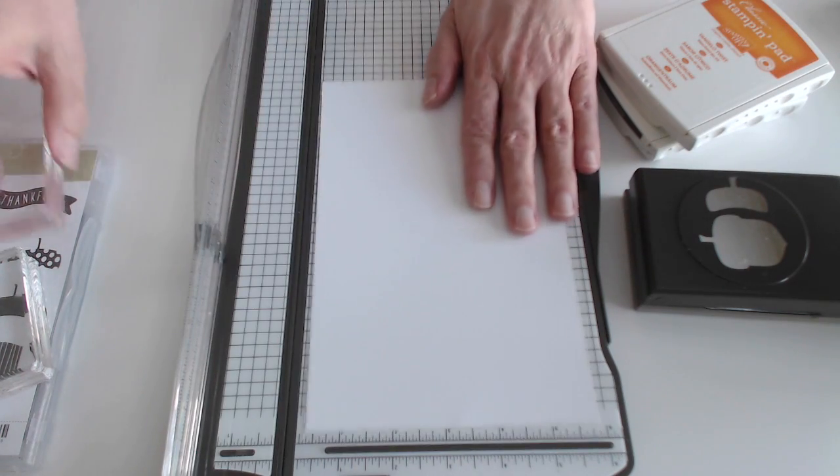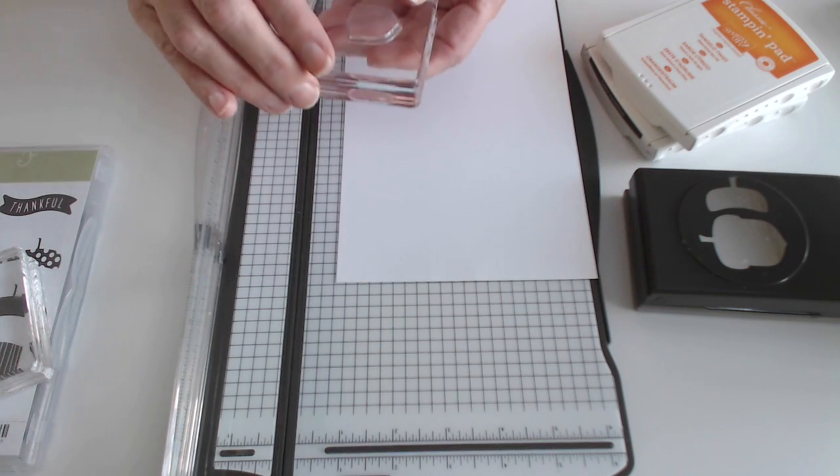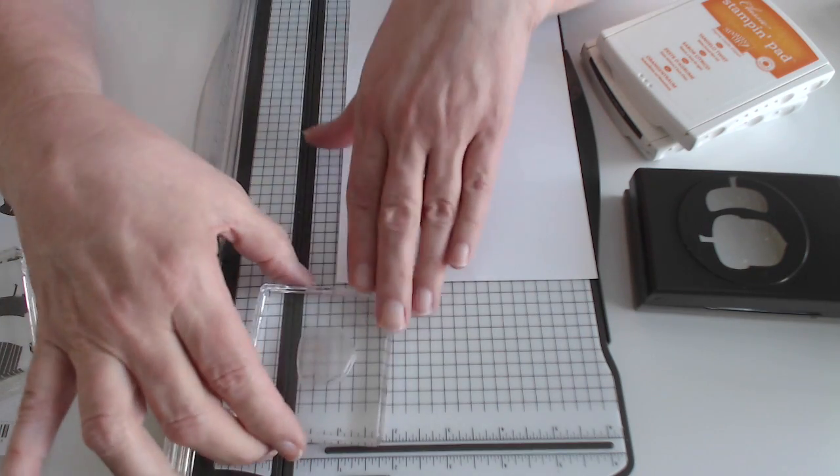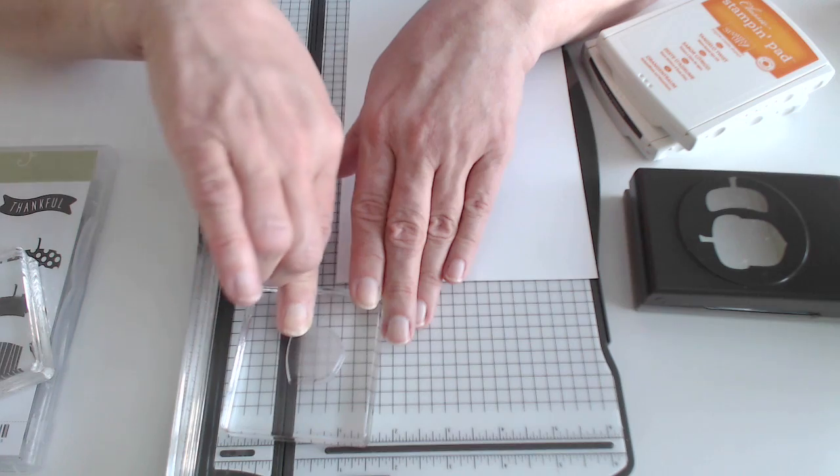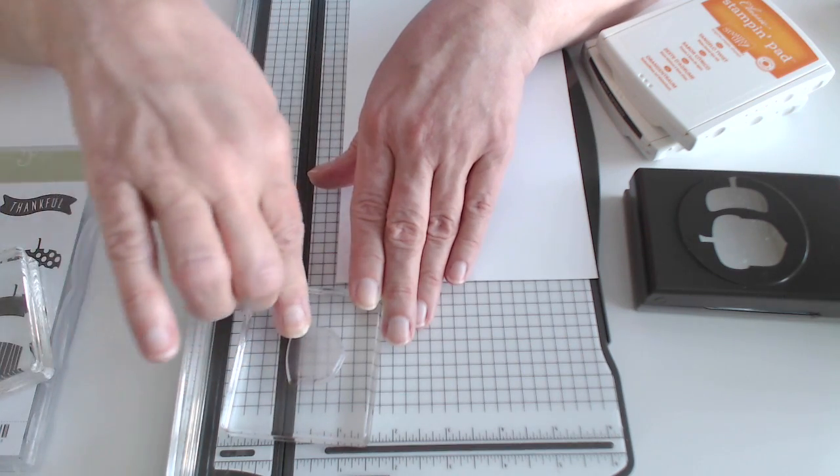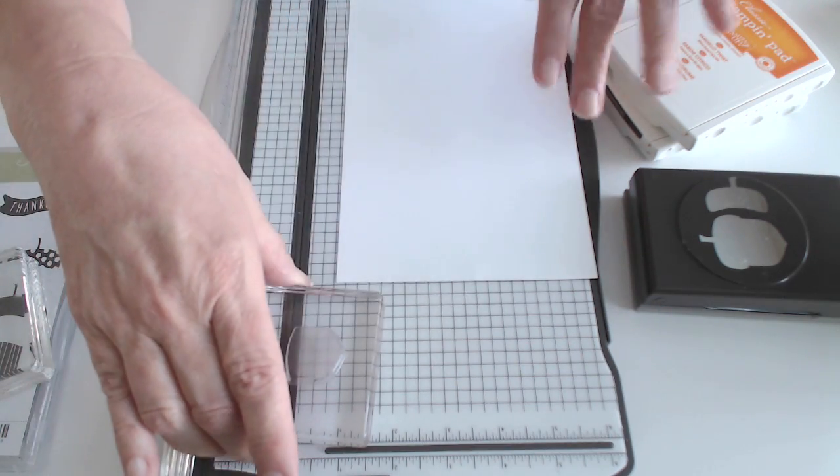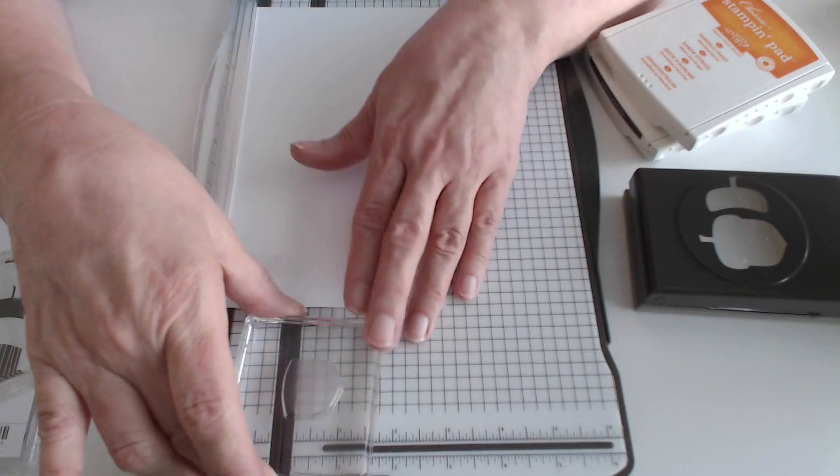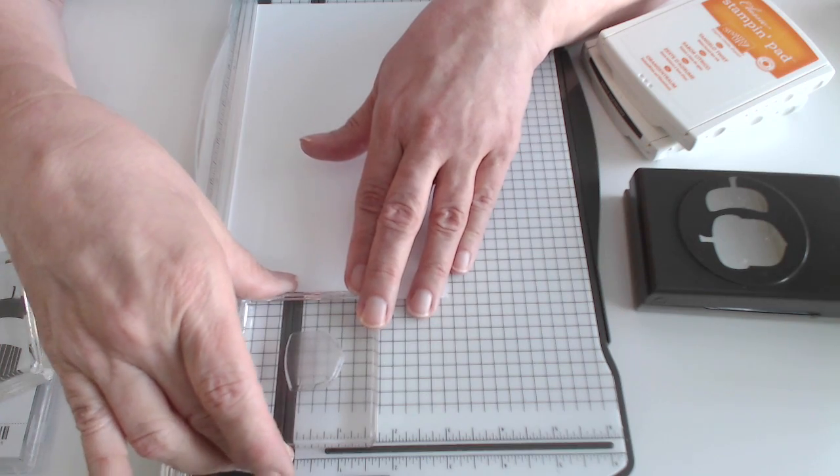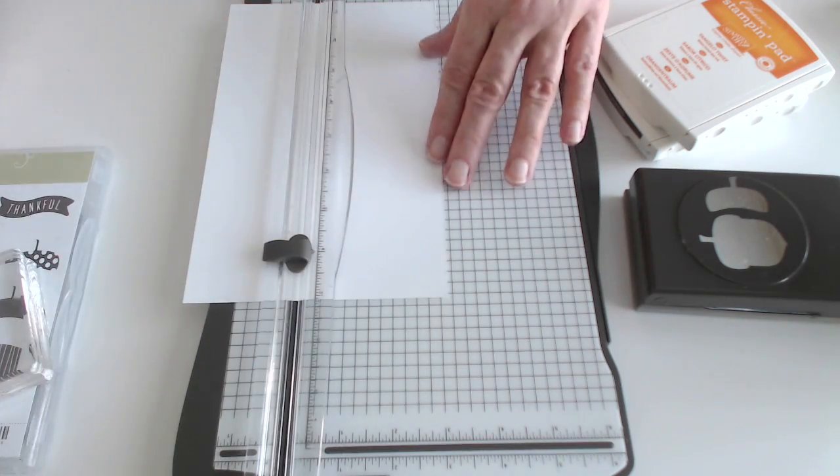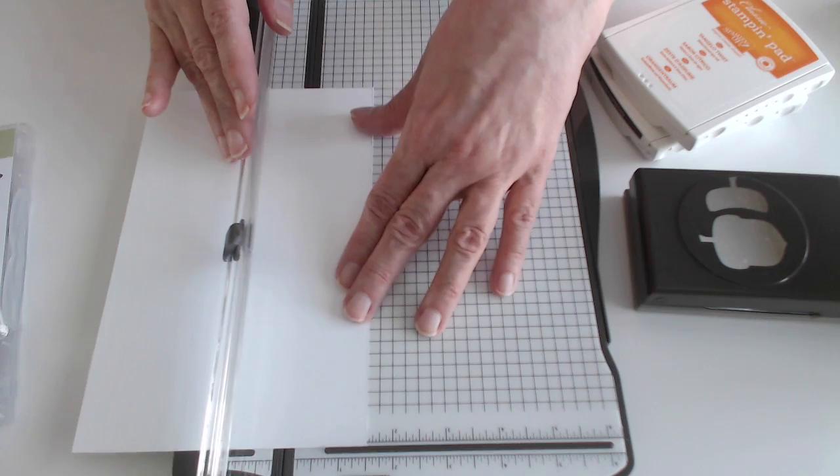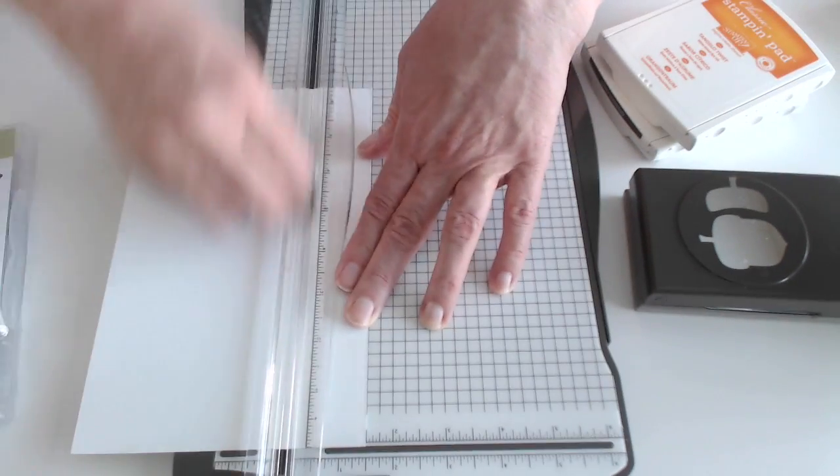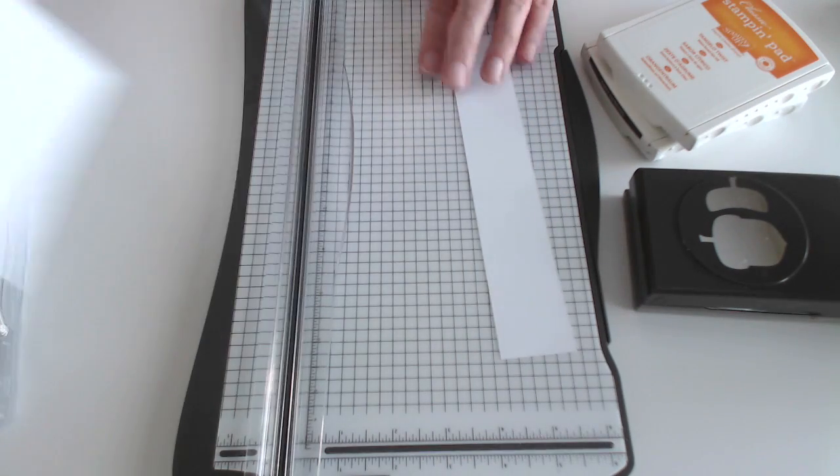Next I measure my stamp and then I cut a strip whatever that measurement is. This one is one and a quarter, I'm going to go a one and a half inch strip. I'm using the whisper white cardstock, and it'll work also for the hat.